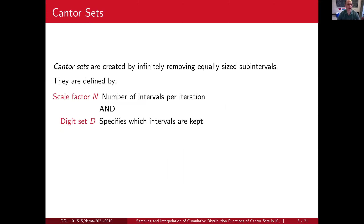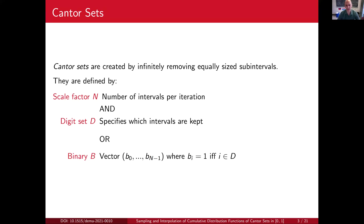Cantor sets can mean a lot of different things, so let me define what I mean by a Cantor set. A Cantor set is created by removing equally scaled subintervals, and these are defined by two objects: one is the scaling factor and the other is the digit set. If you want to think about this in terms of base-n expansions, we define a base n and we define which digits we're allowed to use in those base-n expansions.